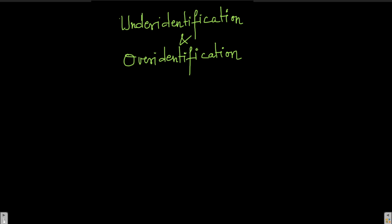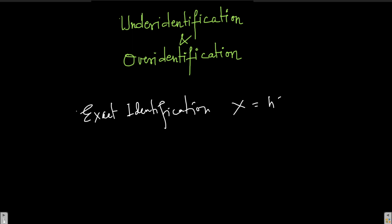Let's begin with exact identification. Exact identification is something that we have already seen. Let's say we have one endogenous variable — that is our x — and our instrument is z, and x is equal to some h, z, and some error term. So I have one endogenous variable and I have one instrumental variable. If my number of endogenous variables is m and my number of instruments is n, then in the case of exact identification, m is equal to n.